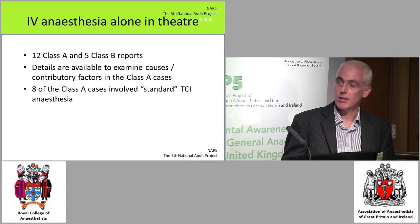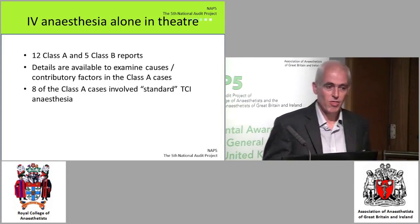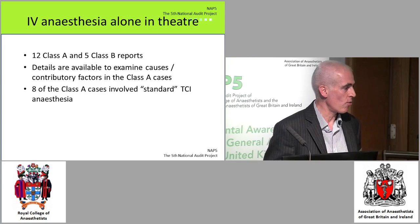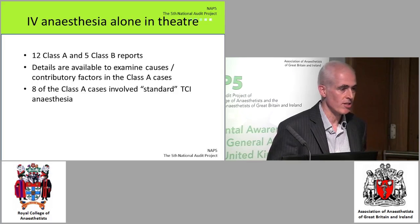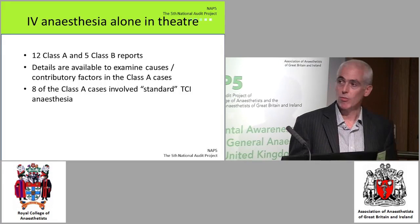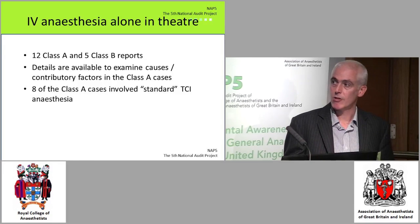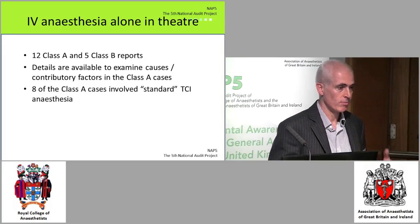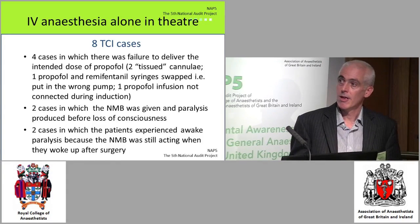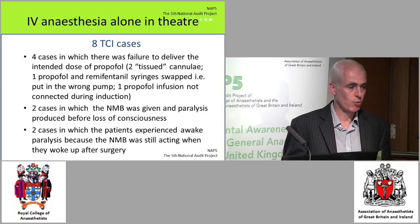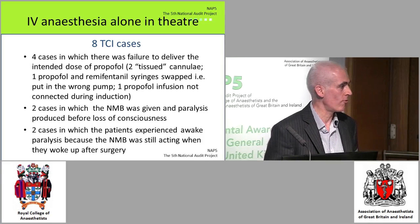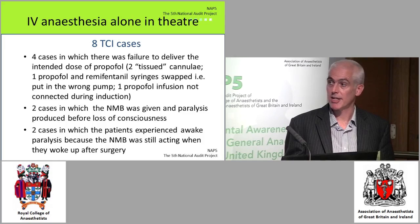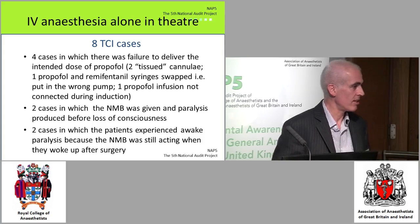When intravenous anaesthesia alone was given in theatre, there were 12 Class A reports and 5 possible reports. These were classed as possible rather than probable or certain largely because we didn't have much information and it was difficult to establish exactly during which period awareness might have occurred. Eight of the 12 involved standard target-controlled infusions using propofol or propofol and remifentanil in separate syringes and TCI pumps. In 4 of these cases there was failure to deliver the intended dose of propofol: two tissued cannulae; in one case the anaesthetist put the propofol syringe in the remifentanil pump and gave much less propofol than intended; and remarkably, in one case the anaesthetist did not connect the propofol infusion before induction, pressed the buttons on the pump and gave the muscle relaxant, but didn't actually give any propofol.